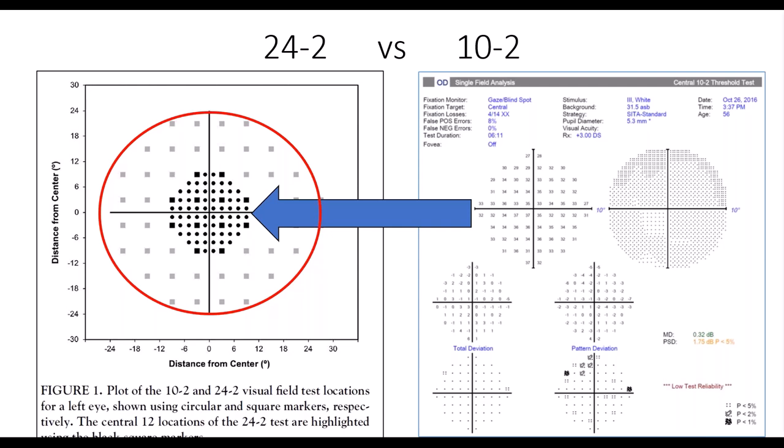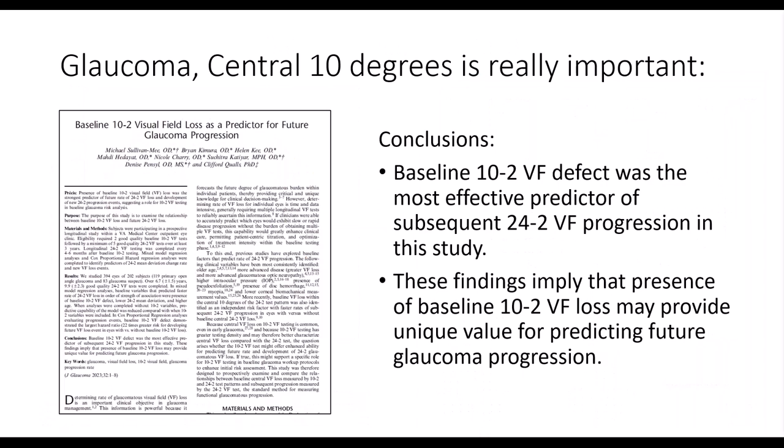The Oculus EasyField can get all of this done for us with the available test pattern options. A recent publication in the Journal of Glaucoma identified that a patient with a 10-2 visual field defect has a high likelihood to progress and get worse over time without more aggressive intervention, such as lowering of the intraocular pressure. So 24-2s really rule the day in visual field testing for glaucoma, and 10-2s are essential as well. All of this is confined within the central 30 degrees.